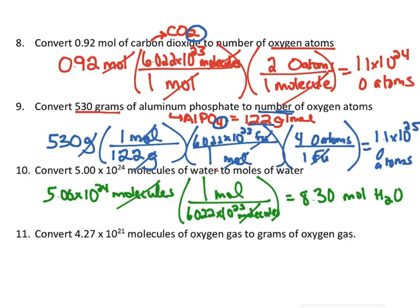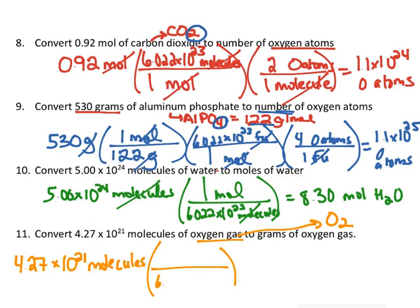Let's look at one more. For this last one, they give me oxygen gas. There's something very important to remember: oxygen gas is diatomic, so when I'm talking about oxygen gas, I'm really talking about O₂ — two oxygens together in one molecule. I'm starting with 4.27 times 10 to the 21st molecules and I want to get to grams. I can't go straight to grams, but I do know there are 6.022 times 10 to the 23rd molecules in one mole. I put molecules on the bottom so it cancels out.